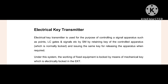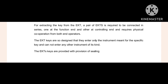For extracting the key from the EKT, a pair of EKTs is required to be connected in series. That means two EKTs are connected in series — one at the junction end, that means at the field nearby the point, LC gate, or signals, and another at the controlling end, that means with the station master or some other controlling person. Physical cooperation from both end operators is required.